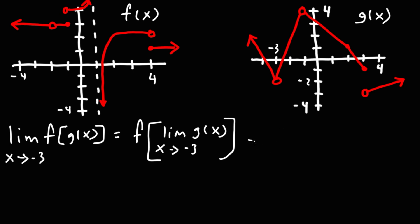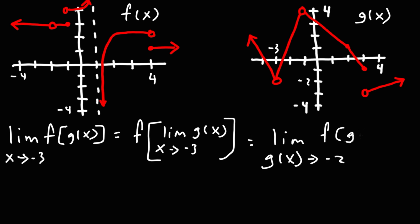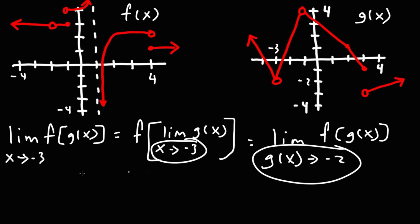So this is going to equal the limit as g of x approaches negative 2 for the expression f of g of x. So as x approaches negative 3, g approaches negative 2.